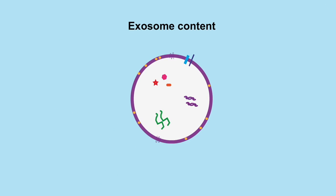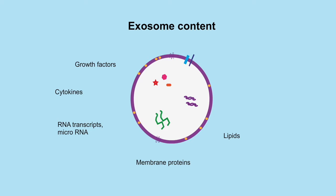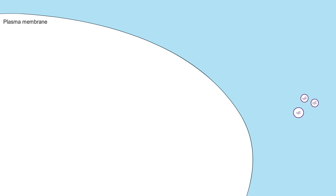Secreted exosomes can journey through extracellular space to encounter a recipient cell. These vesicles can contain many things including growth factors, cytokines, RNA transcripts, microRNAs, or even prion proteins such as beta-amyloid and alpha-synuclein. Recent evidence suggests that because exosomes can transfer such materials between cells, they contribute to disease pathogenesis, for instance by promoting tumor metastasis or disseminating pathogenic proteins that drive neurodegeneration.